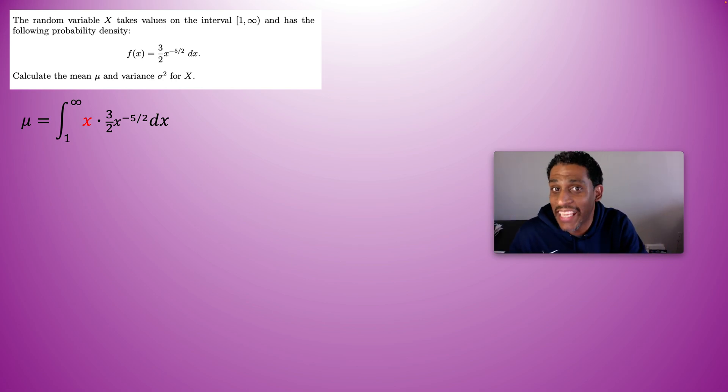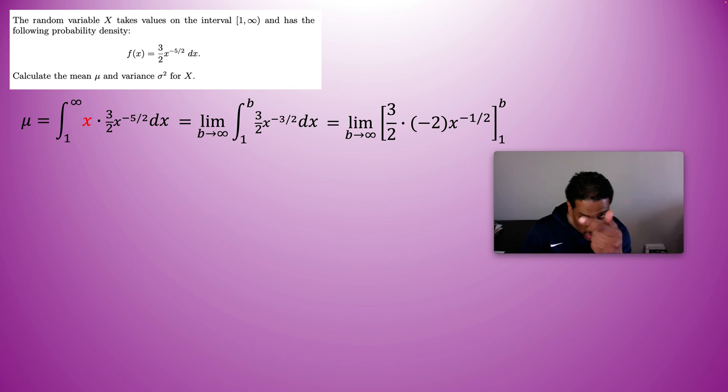So x times x to the negative 5 halves would be x to the negative 3 halves. But remember, it's improper so we have to introduce a limit and let a variable approach infinity. The antiderivative is going to be you add 1 to that and divide by the same thing. So if you're at negative 3 halves and you add 1, you'll be at negative 1 half. But if you divide by negative 1 half, it's the same thing as multiplying by negative 2. So there we have it, our antiderivative.